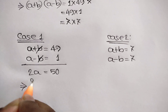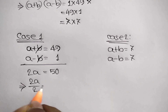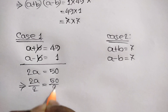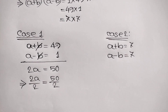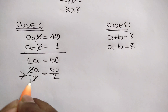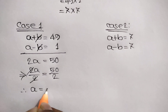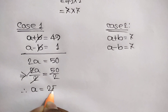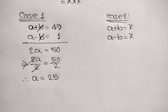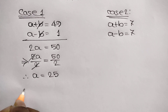Dividing both sides by 2, we get 2a over 2 is equal to 50 over 2. The 2s cancel, so the value of a is equal to 25. Now, from a plus b is equal to 49: